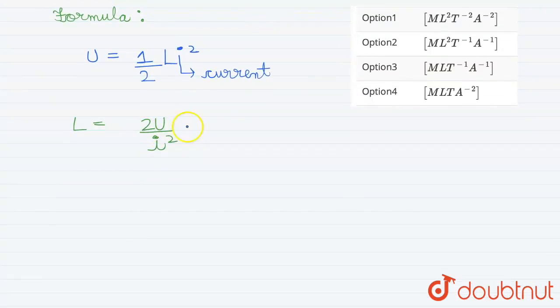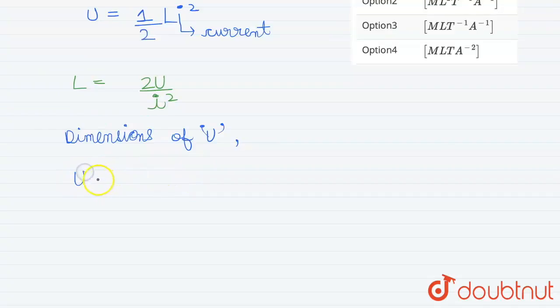Now the dimensions of energy. Now let us calculate the dimensions of U. Since U is an energy, its dimension will be same as that of kinetic energy and for kinetic energy we know its formula is given by half m v squared.